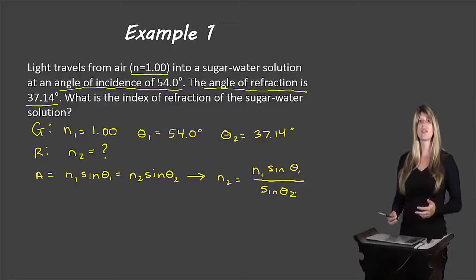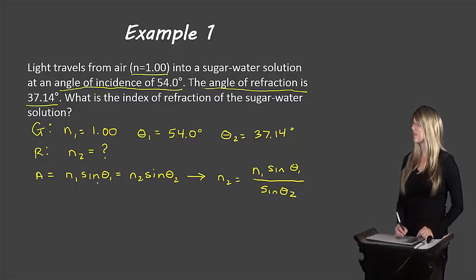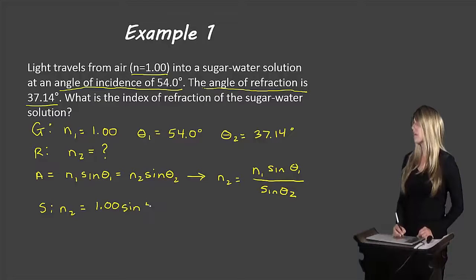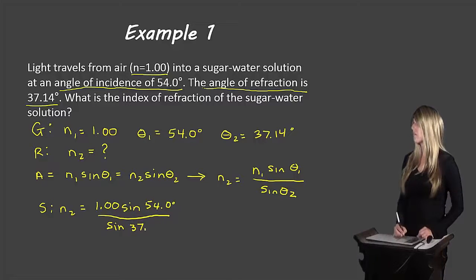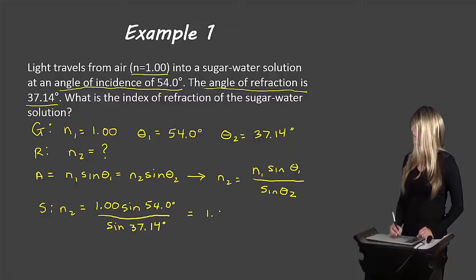If you don't know how to rearrange this equation, come ask me in class. For substitute and solve: n2 equals 1.00 times sine(54.0°) all over sine(37.14°). If we do the math, that equals 1.34.